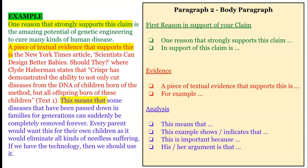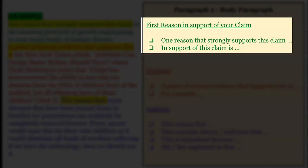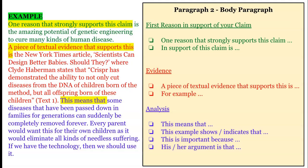This paragraph should start with the first reason in support of your claim. First, start by saying something like 'one reason that strongly supports this claim' or 'in support of this claim,' and then briefly describe your reason. For example: 'one reason that strongly supports this claim is the amazing potential of genetic engineering to cure many kinds of human disease.'